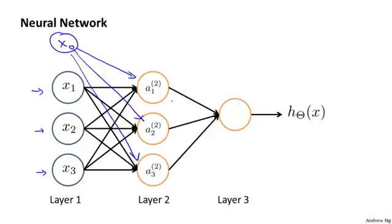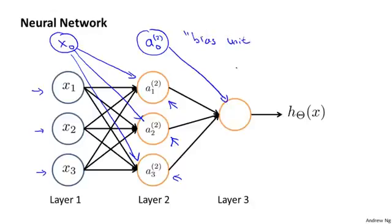And here we have three neurons, which I've written as a21, a22, a23. I'll talk about those indices later. And once again, we can, if we want, add in this a0 and add an extra bias unit there that always outputs the value of one. And then finally, we have this third node at the final layer that outputs the value that our hypothesis h of x computes.